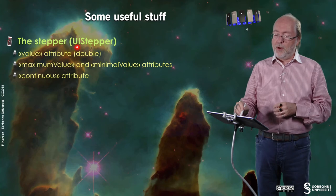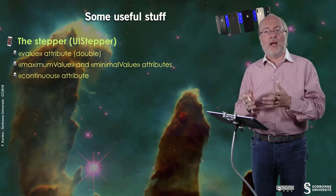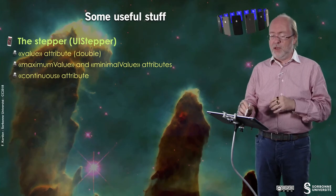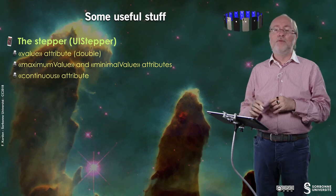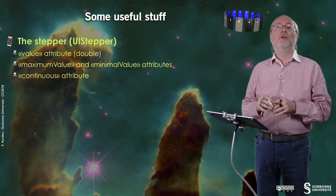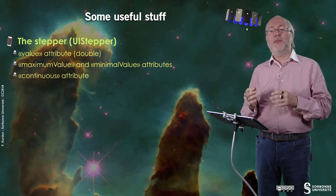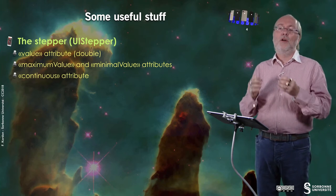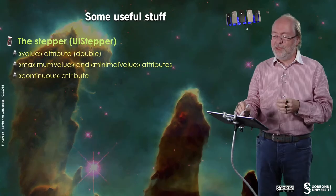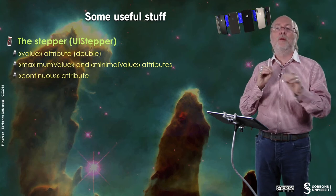Here are some useful things. The stepper you will manipulate is represented by a class called UIStepper. It has an attribute called value that represents the current value of the stepper. This value varies between a minimum value and a maximum value that you can specify thanks to other attributes. There is also a fourth attribute called continuous, which is a boolean and lets you enable the retrieval of decimal values instead of integer values, even though everything is represented as a double — a double precision float.